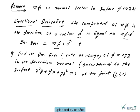We have the question: find the directional derivative — also called rate of change — of phi = xyz, in the direction normal to the surface x²y + y²x + yz² = 3 at the given point. We need to find the directional derivative of phi = xyz in that direction.